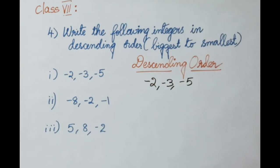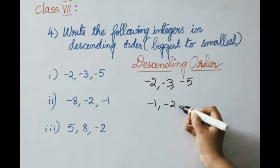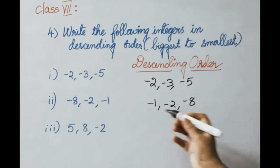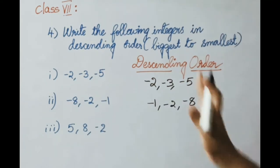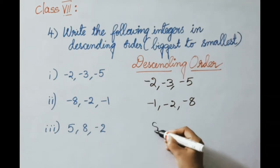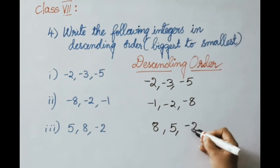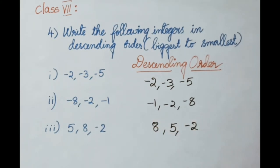See the second set: minus 8, minus 2, minus 1. On the number line, right to left, minus 1 comes first, then minus 2, then minus 8. That is the descending order. See the next set: 5, 8, minus 2. From right to left on the number line: 8 comes first, then 5, then minus 2. That is the descending order — big to small.